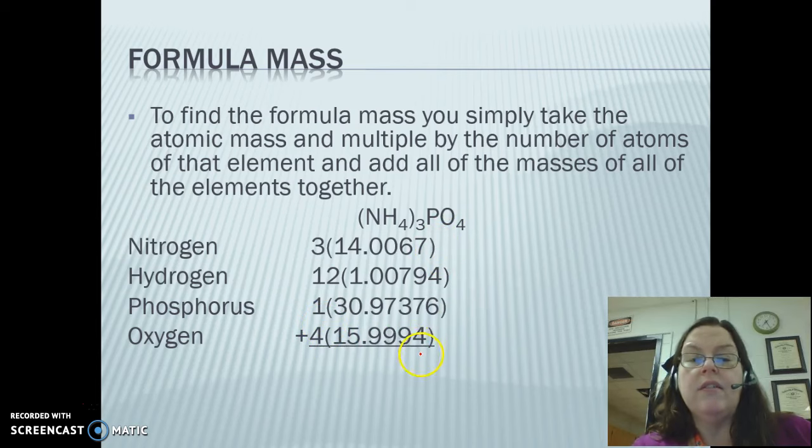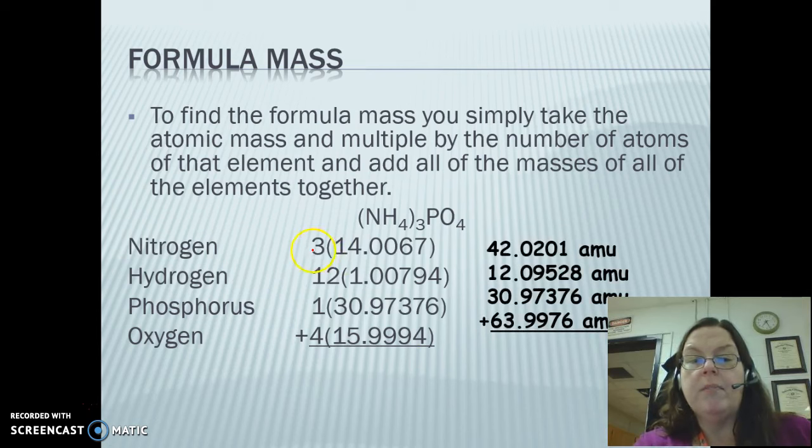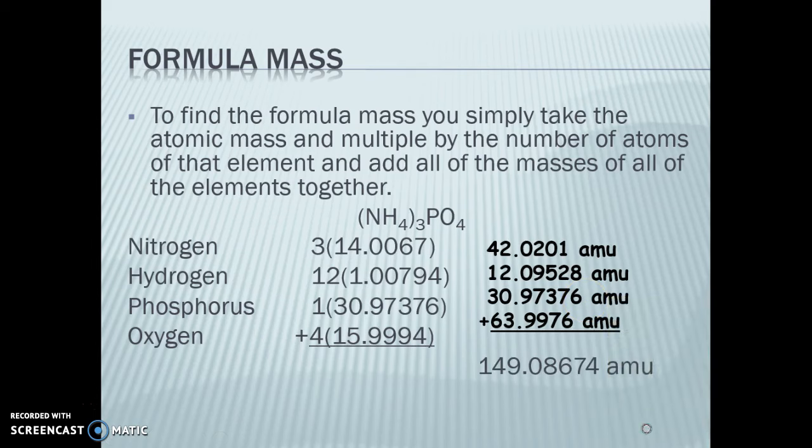We're going to multiply each of these things first. We multiply 3 times 14 and we get this much. We multiply 12 times this and we get this much. 1 times this and we get that much, and 4 times this and we get that much. Then we add all of that together, and we get 149.08674 AMU.